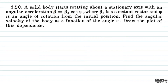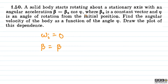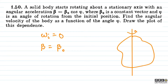If we analyze the question, we can see that the body starts rotating, which means the initial omega is equal to zero. The magnitude of the angular acceleration is equal to beta-naught, and the body will rotate as a solid body. The direction is defined using the right-hand thumb rule.